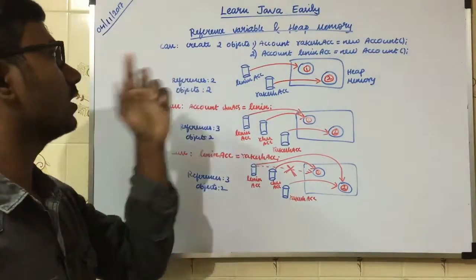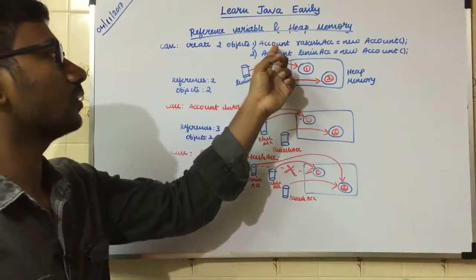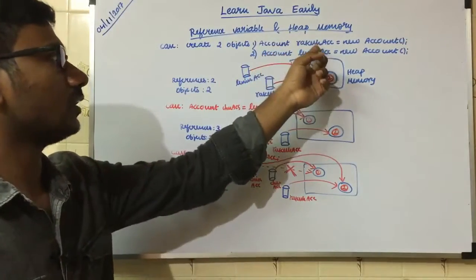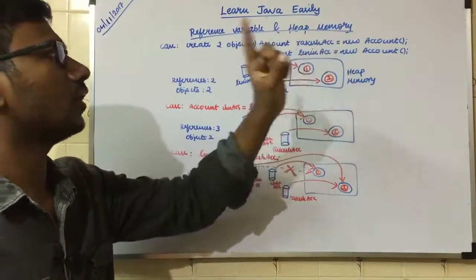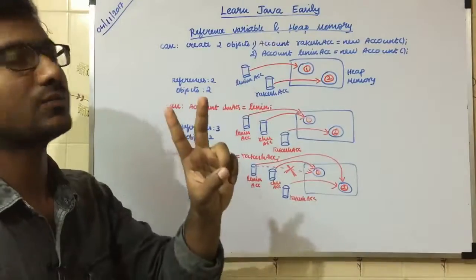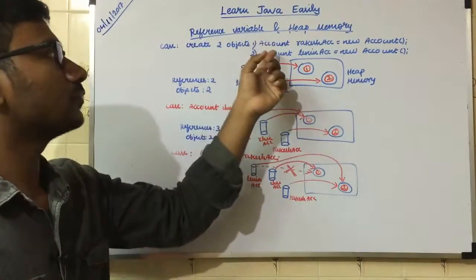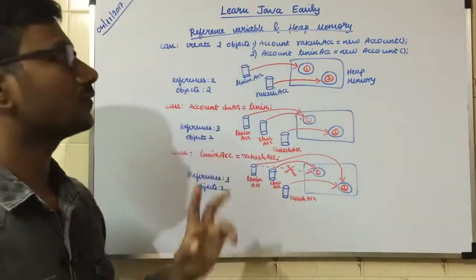First case is to create two objects. Account is the first object, Learning is the second object. The class name is Account.